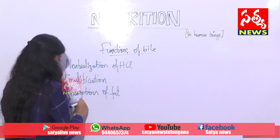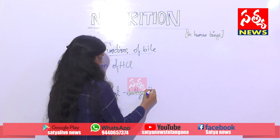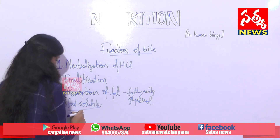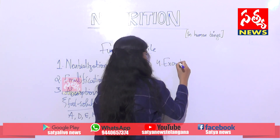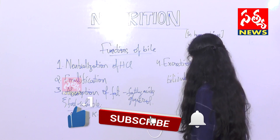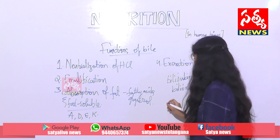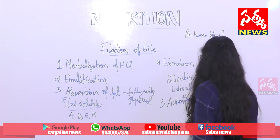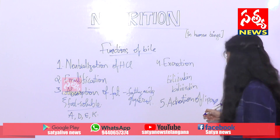Number three: absorption of fats and fat soluble substances - these fats are fatty acids and glycerol, and fat soluble vitamins like vitamin A, vitamin D, vitamin E, and vitamin K. Number four: excretion - the bile salts such as bilirubin and biliverdin help in the excretion of waste materials. Number five: activation of lipase - the bile juice does not contain any enzyme but it helps in the activation of lipase for digestion of fats.